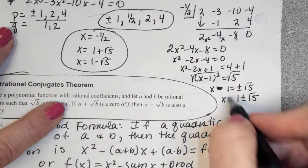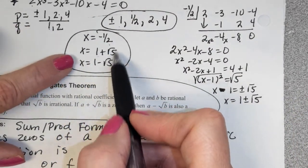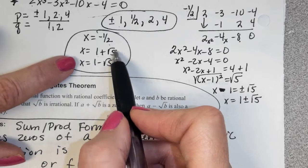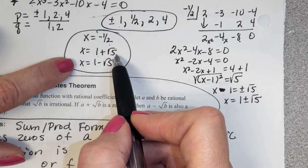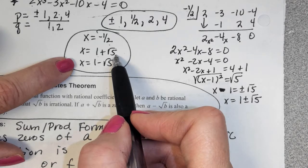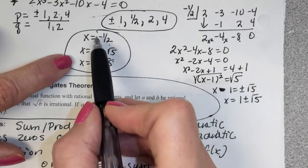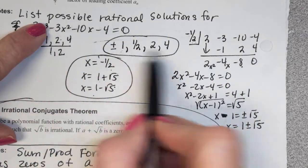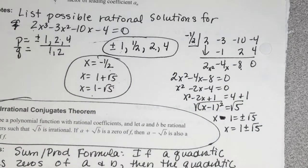Completing the square: x² - 2x = 4. Half of 2 is 1, squared is 1. Adding 1 to both sides: (x - 1)² = 5. Taking the square root: x - 1 = ±√5, so x = 1 ± √5. Those are the other two zeros. So the three zeros are x = -1/2, x = 1 + √5, and x = 1 - √5. These last two are irrational and real.